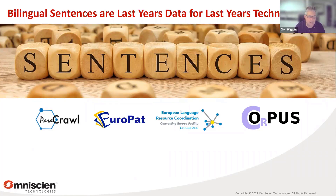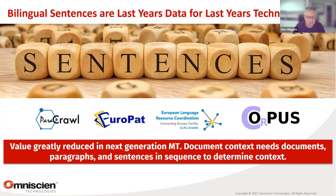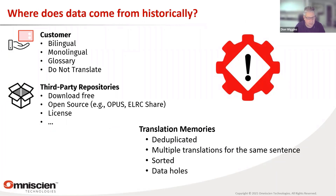These sources are really good as a base-level set of bilingual sentences, but bilingual sentences are last year's data for last year's technology. The value of just sentences is actually declining in MT engines. Document context needs documents, paragraphs, and sentences in sequence to determine context. The problem with existing translation memories — including Paracrawl, Europap, and most others — is that data is usually sorted and deduplicated. You might have multiple translations of the same sentence and they're in a sorted order with holes in the data. You can't get the context from around those sentences.